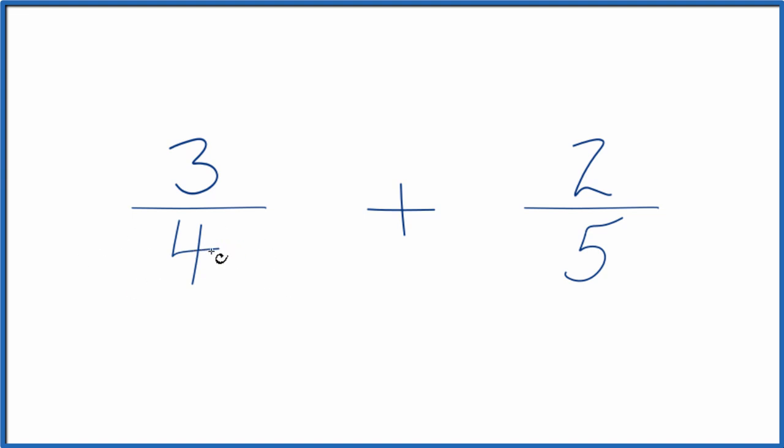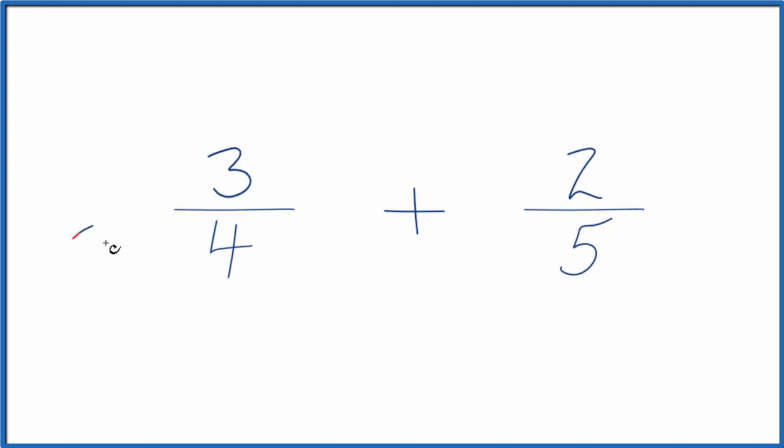Probably the easiest way here is to multiply 4 times 5. 5 times 4, that would equal 20. And over here we can multiply 5 times 4. 5 times 4, that equals 20.